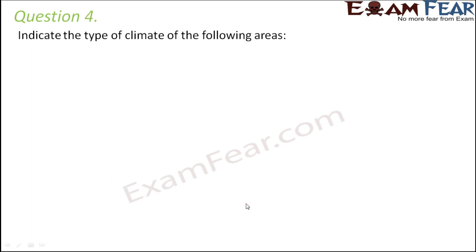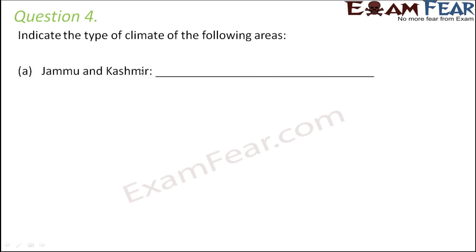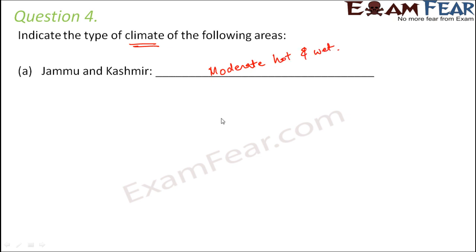Question number four: indicate the type of climate of the following areas. Climate is the overall, typical weather of a place. To give an accurate value you would need to study weather patterns over the last 10–15 years, but since we are aware of the kind of weather that prevails in these parts of the country, we can answer. Jammu and Kashmir — it is moderately hot and moderately wet. There is not too much rainfall and not too much heat, so summers are not that hot. It's moderate hot and moderate wet.